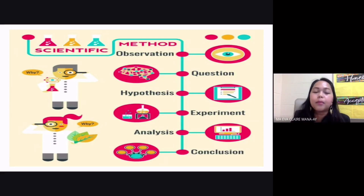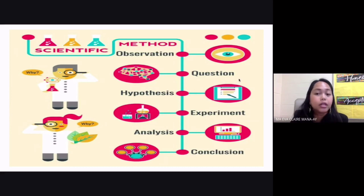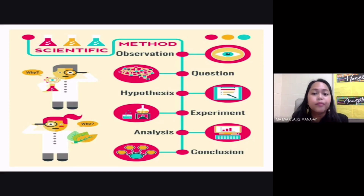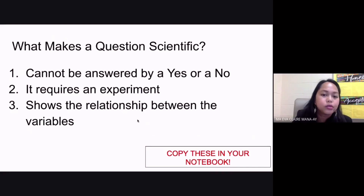That's the first step of your scientific method — observation — and you already know the difference between observation and inference. The second step is a scientific question. When you say scientific question, it can be tested, it is not answerable by just a yes or a no, it requires experimentation or testing, and it shows the relationship between your variables.